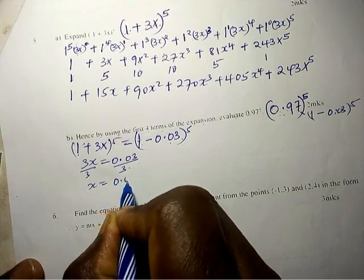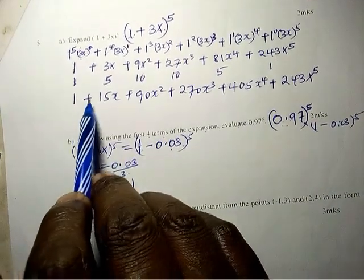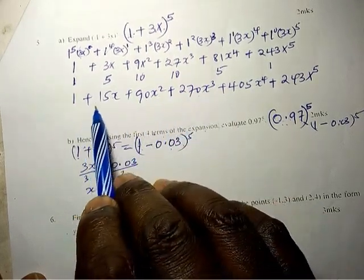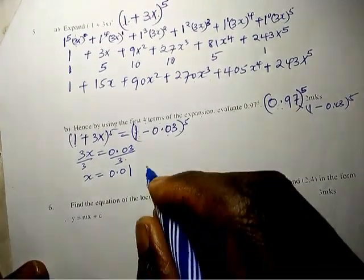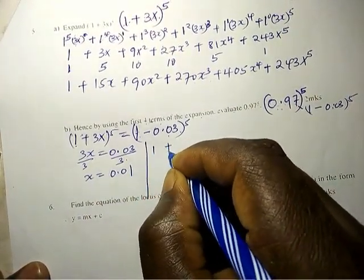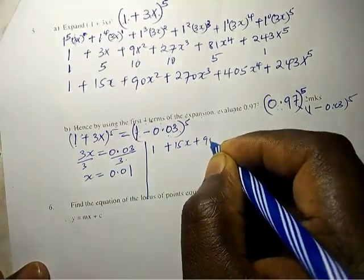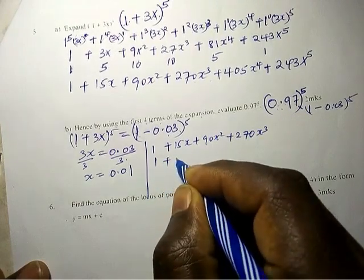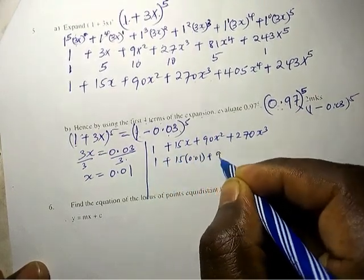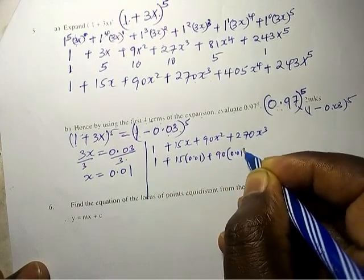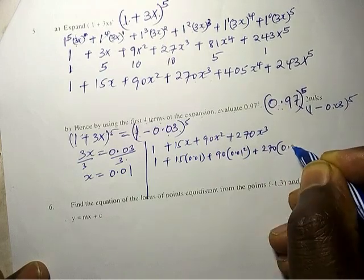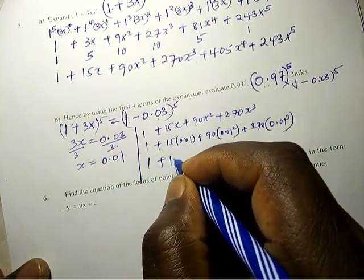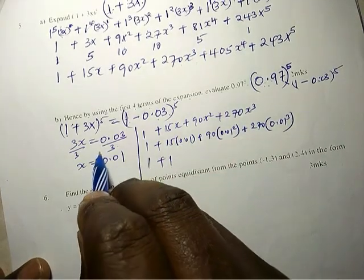Using the first four terms - one, two, three, four - we substitute x = 0.01: 1 + 15(0.01) + 90(0.01)^2 + 270(0.01)^3.